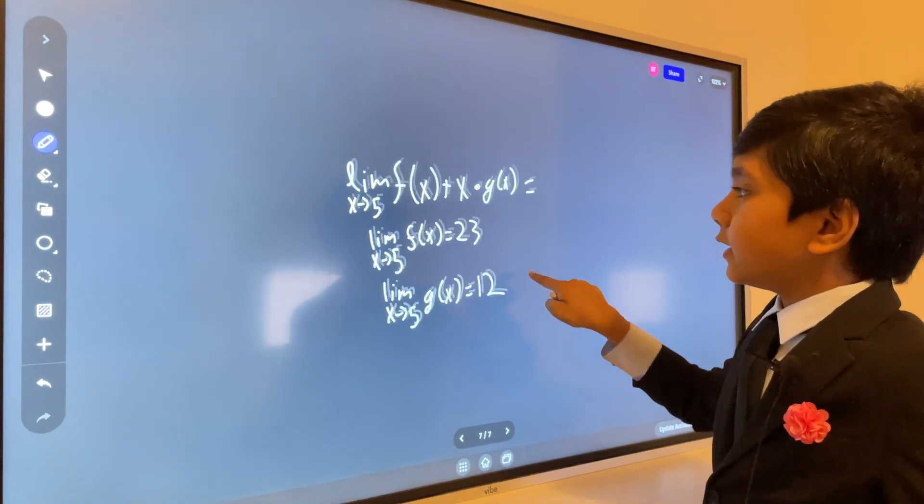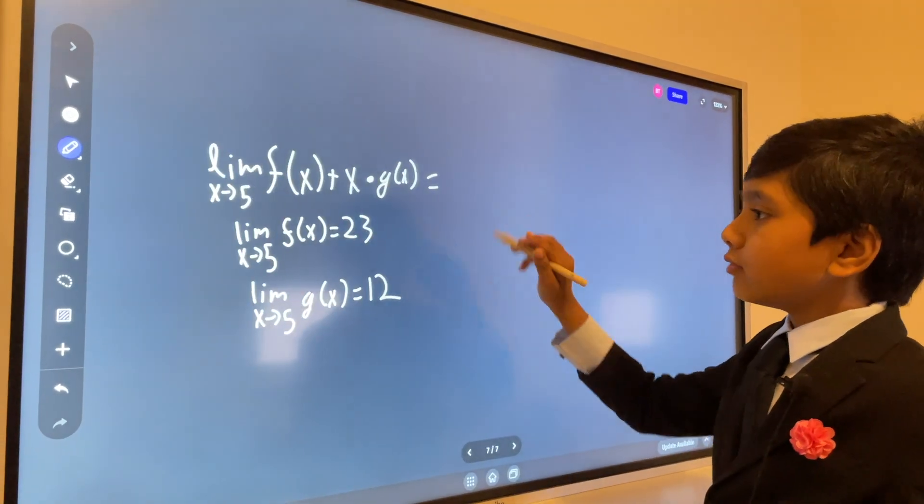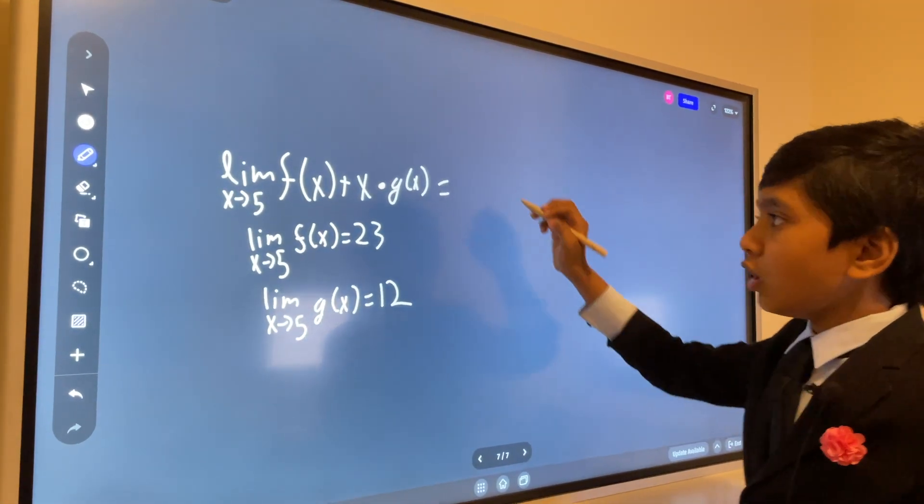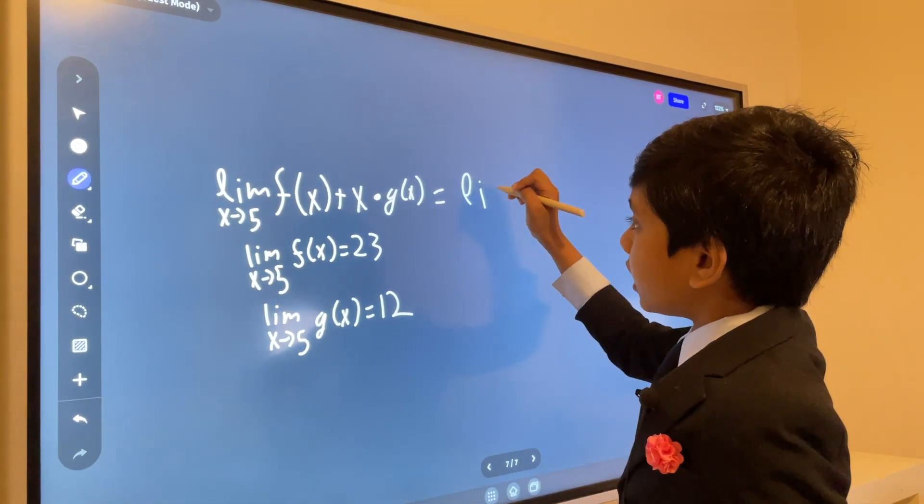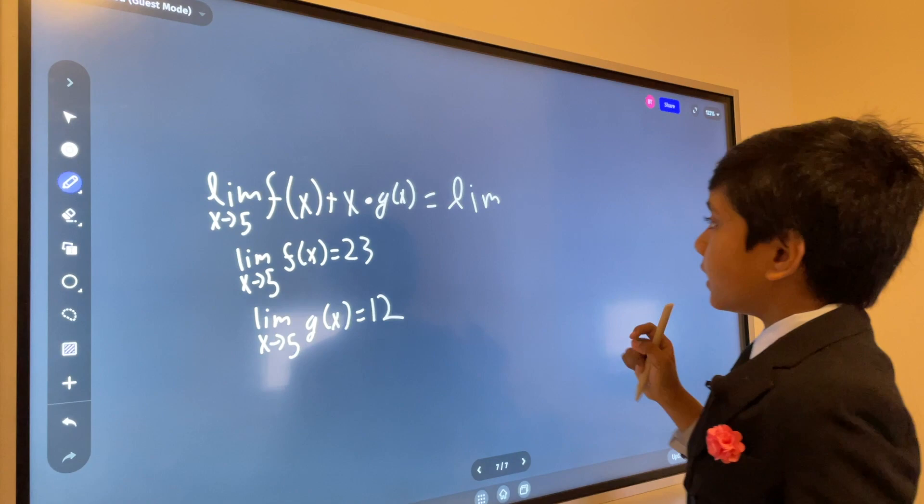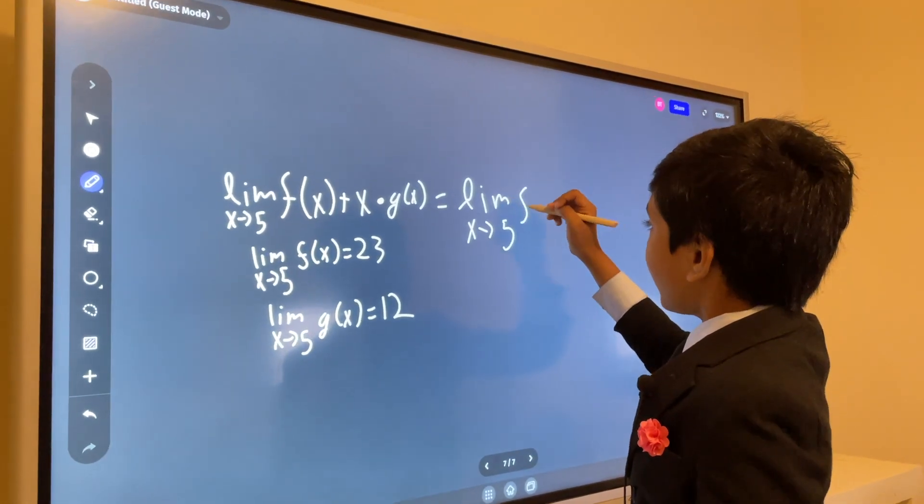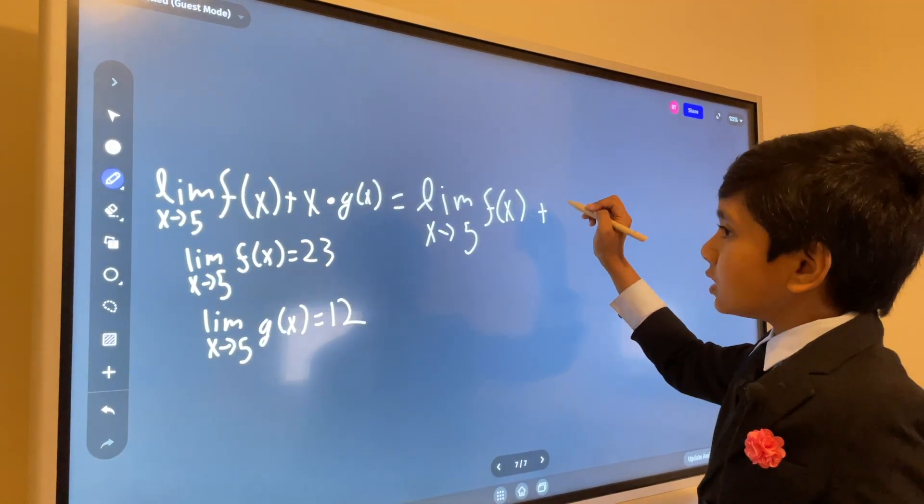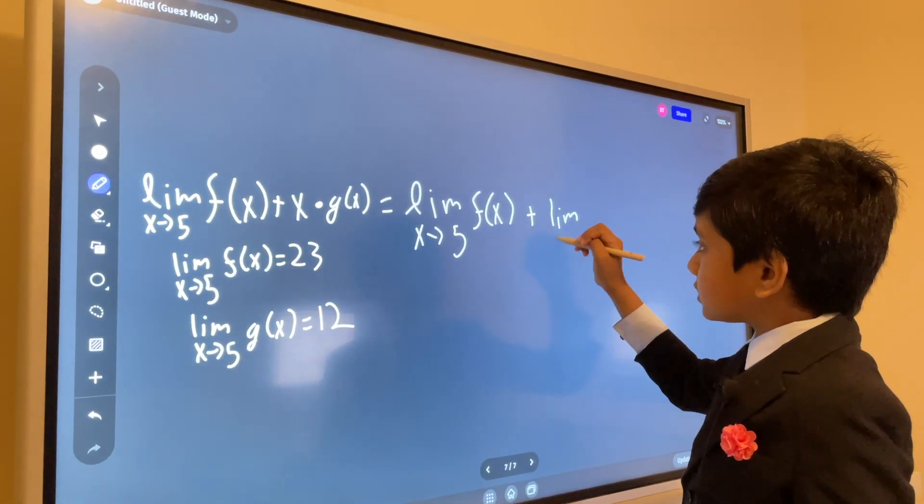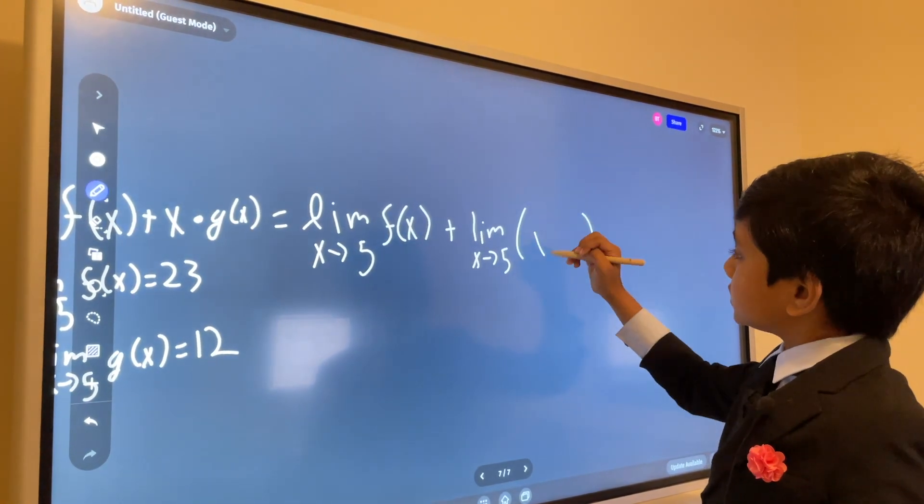Let's see what we can do here. Well, like in the exit slip, we can use the addition law, or law number 1, to break this up. So, the limit as x approaches 5 of f(x) plus the limit as x approaches 5 of x times g(x).